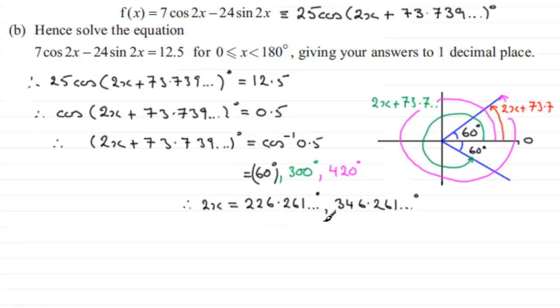Now I divide each of these by 2 to give me x. If I do that, I get that x equals, for the first one, 113.130 and so on degrees. And for this one, 173.130 degrees. And now all I've got to do is give my answers to one decimal place. So if I do that, we therefore have that x equals 113.1 degrees. And then for the second one, 173.1 degrees. And I'm just going to put here both to one decimal place, 1dp for short.